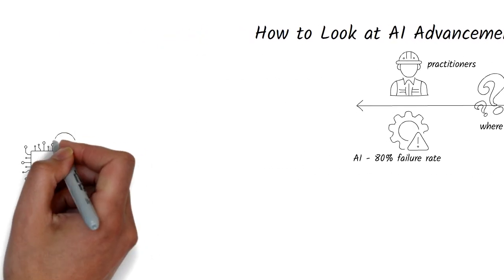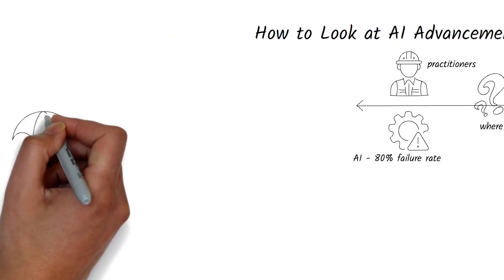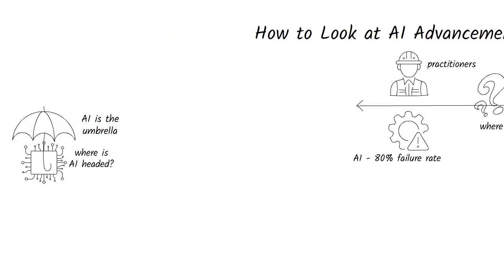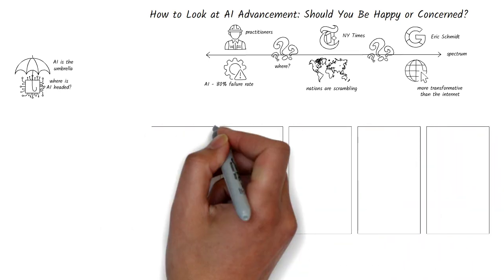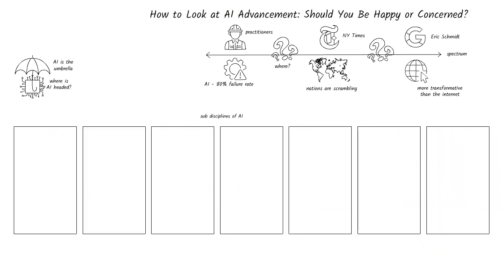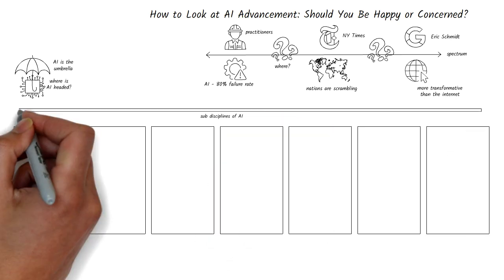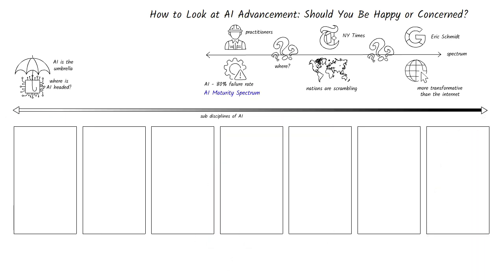AI is not a monolithic entity. It's an umbrella term that covers a range of technologies, each at a different stage of maturity. By breaking down AI into its sub-disciplines, we can better understand where genuine progress has been made and where the hype might be overshadowing reality. Also, instead of accepting opinions, let's use an AI maturity spectrum to be more objective. So let's dive in.